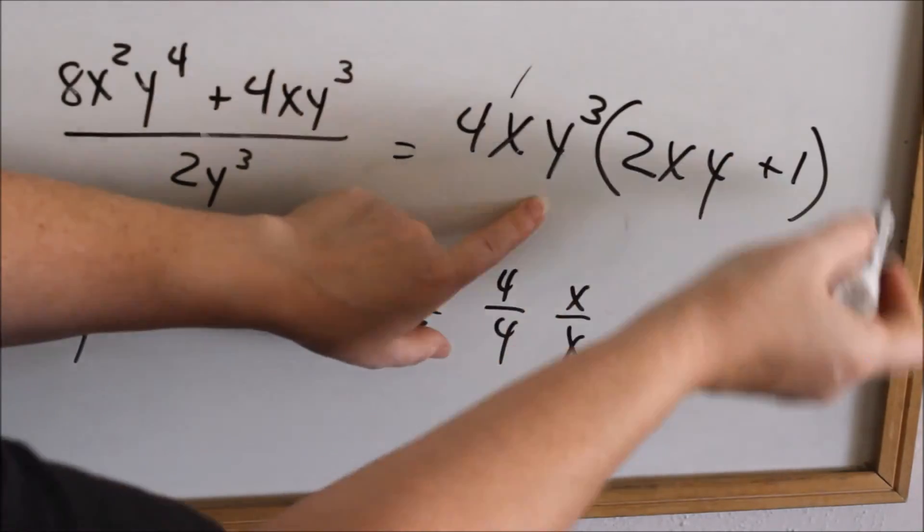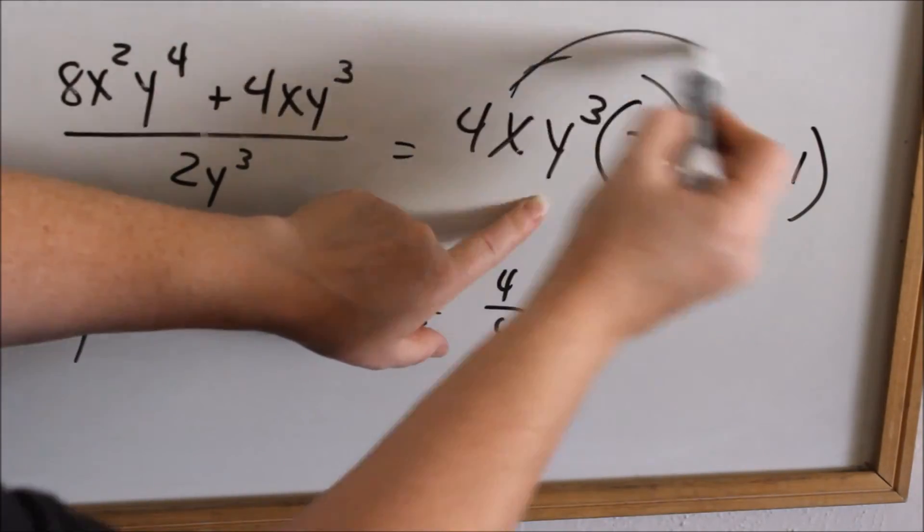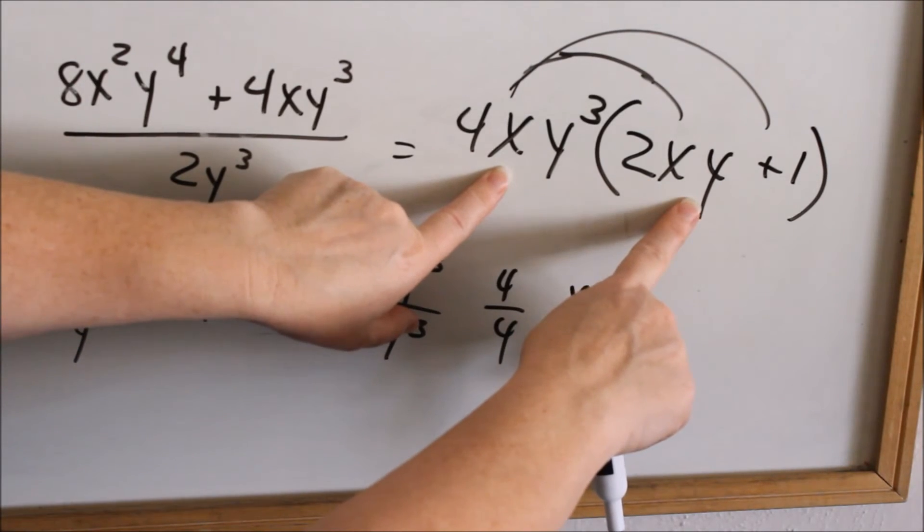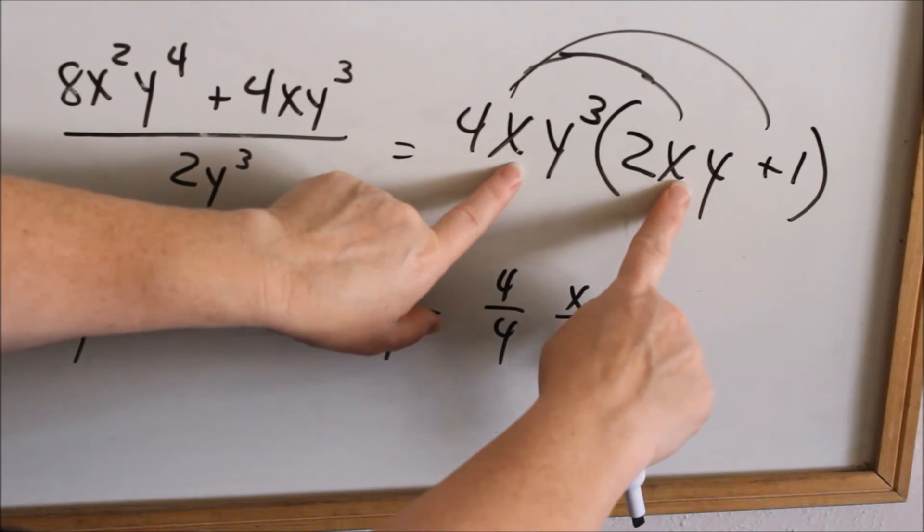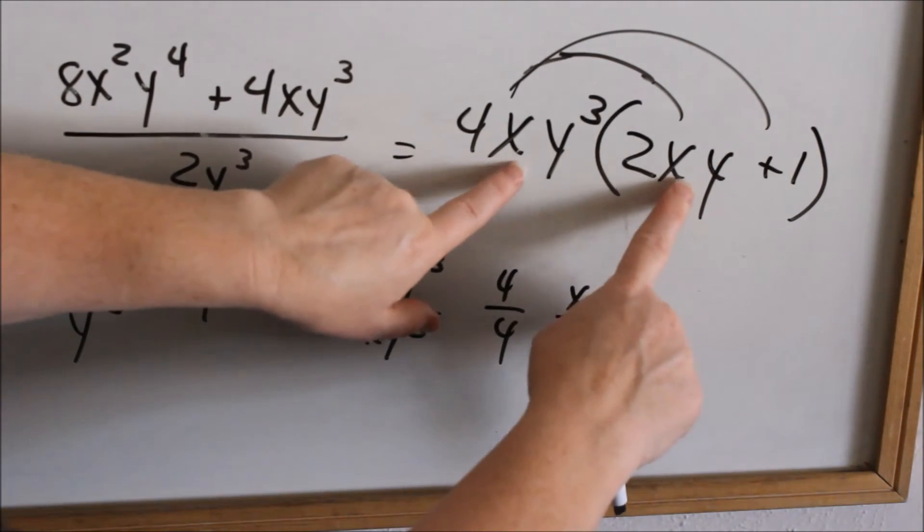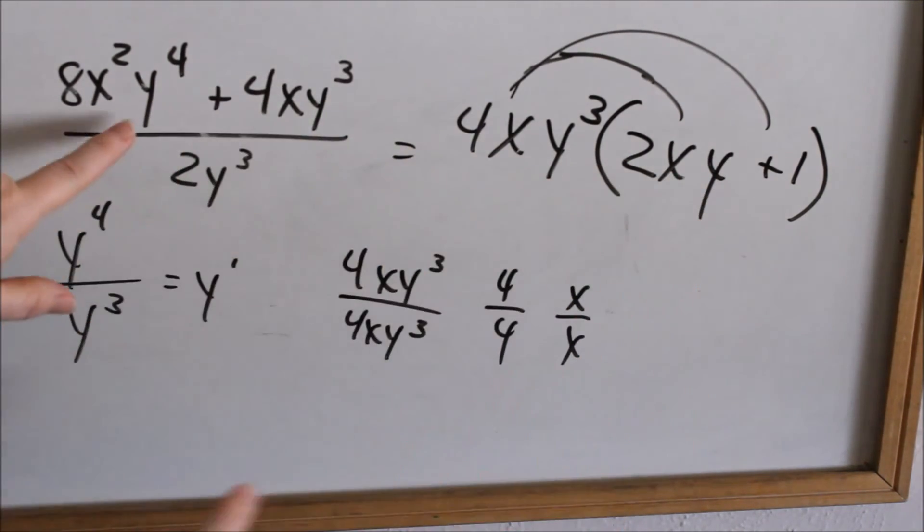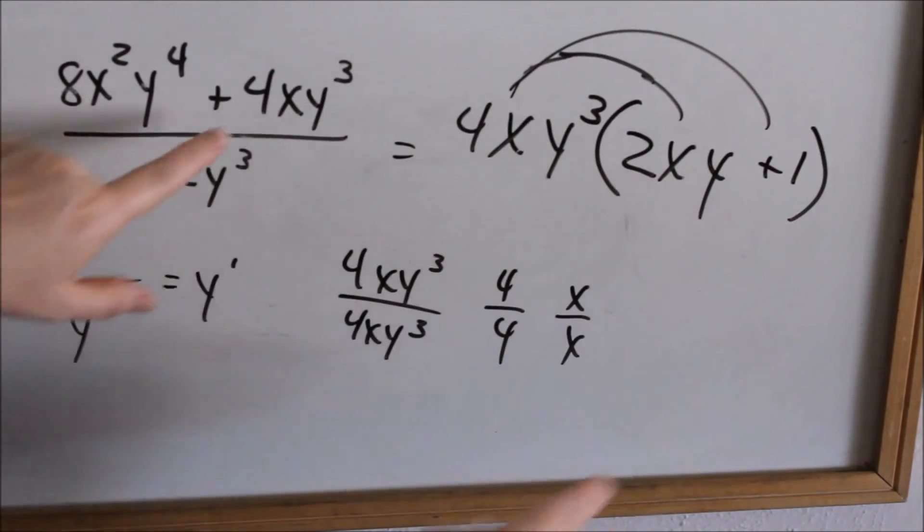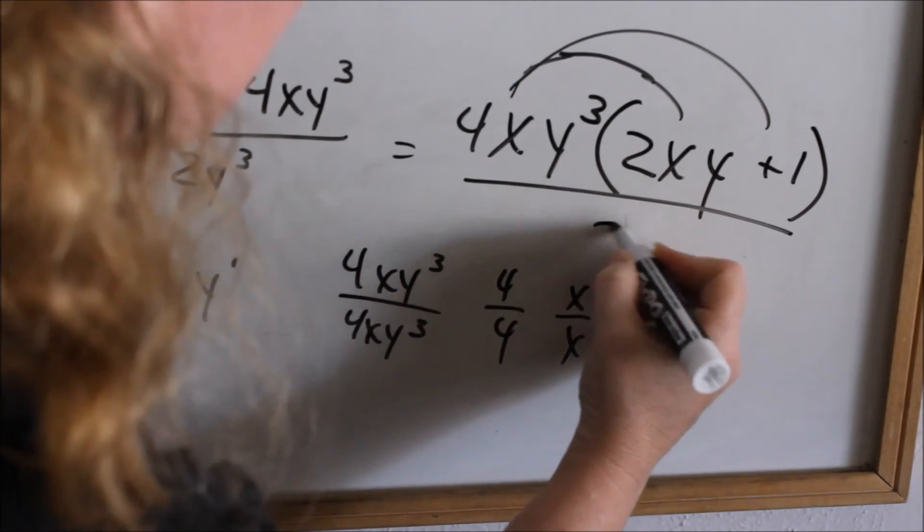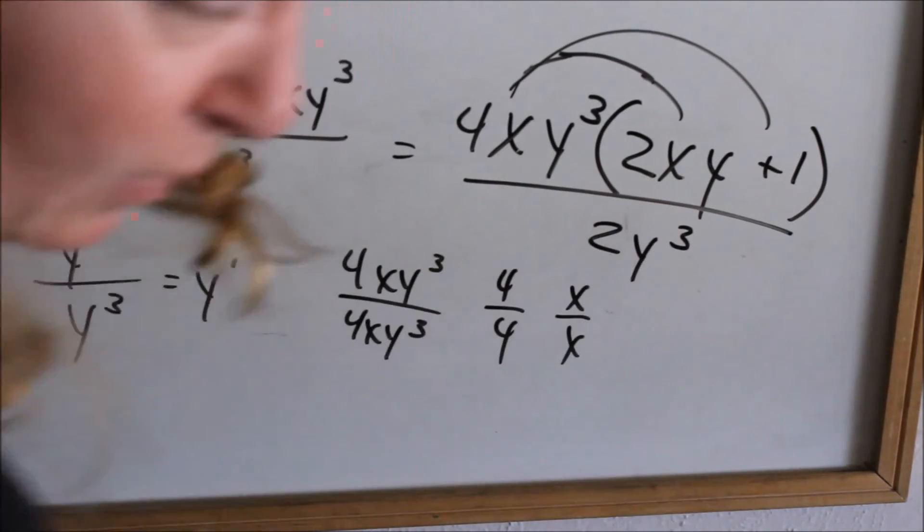Double-check yourself. When you go back and distribute this, you should get the same thing you started with. 4xy cubed times 2xy is 8x squared y to the 4th. And that's what we have. This times 1 is just that. And we still have over 2y cubed.